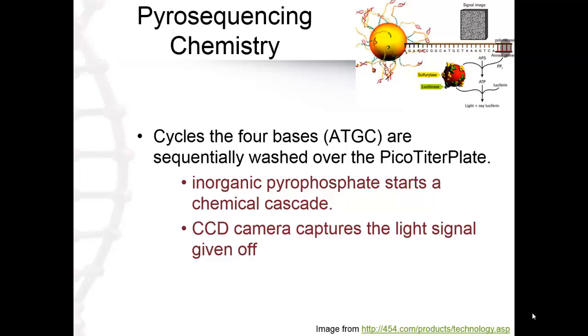In a number of cycles, the four bases - adenine, thymine, guanosine, and cytosine - are sequentially washed over the PicoTiter plate, or PTP plate. The incorporation of a new base is associated with the release of an inorganic pyrophosphate starting a chemical cascade. This results in the generation of a light signal, which is captured by the CCD camera. This sequencing machine will then record, nucleotize, and provide a file with the results.